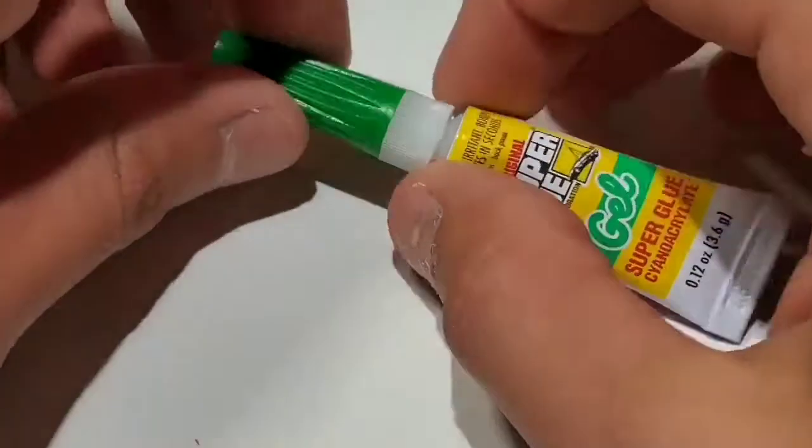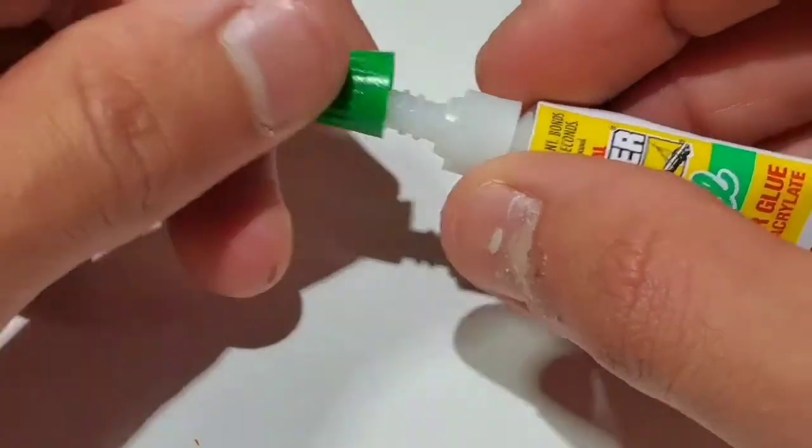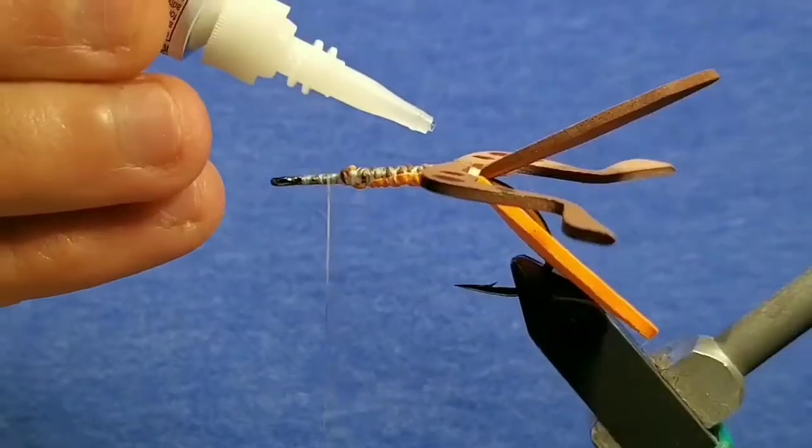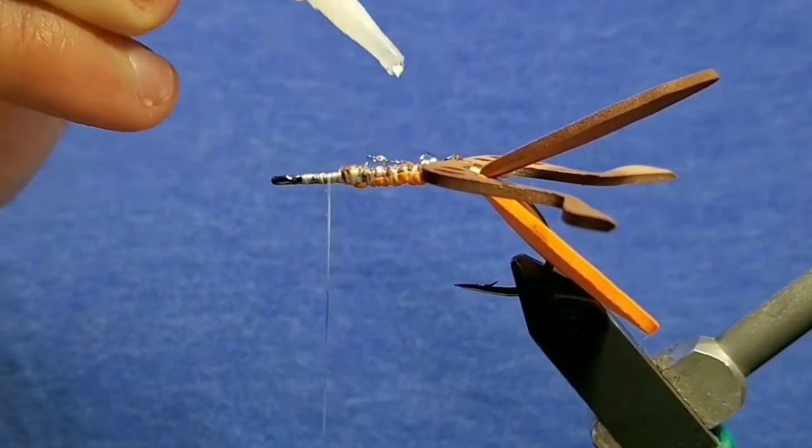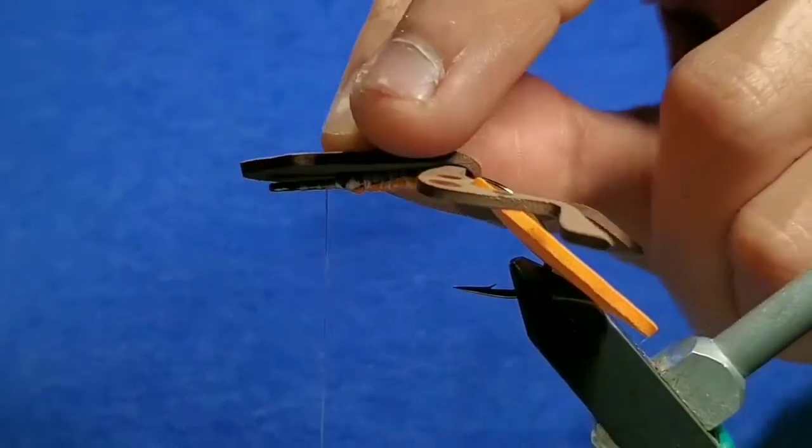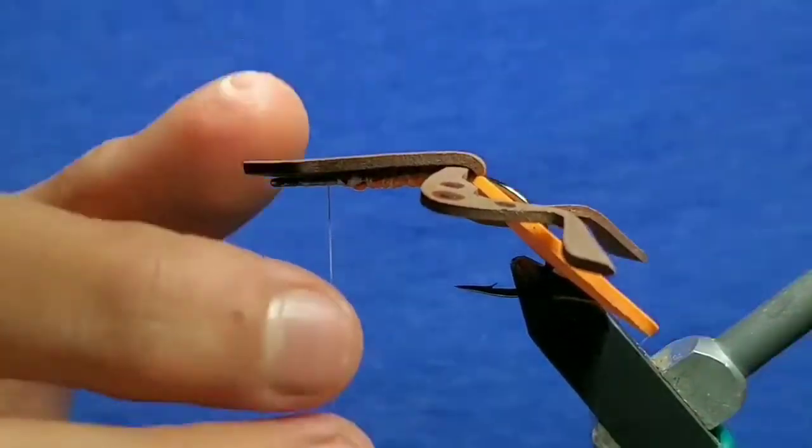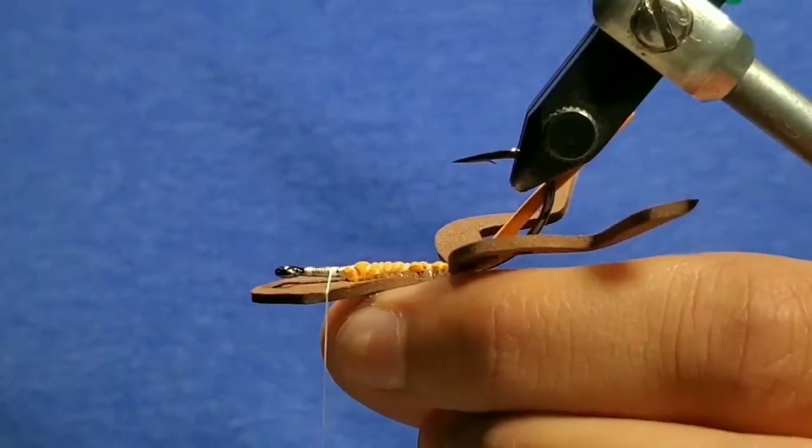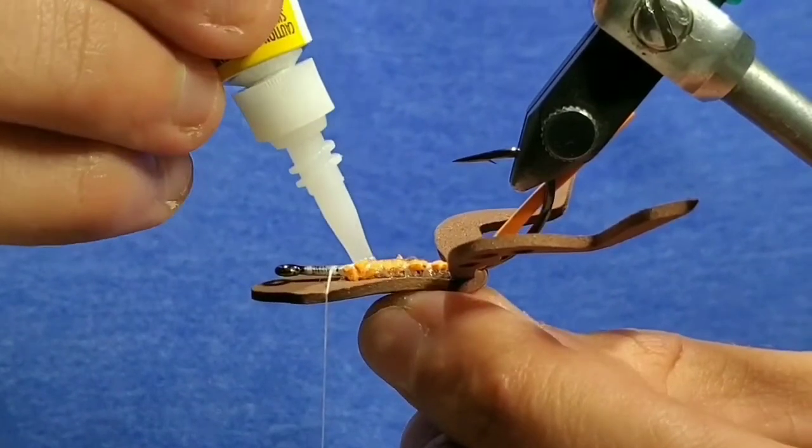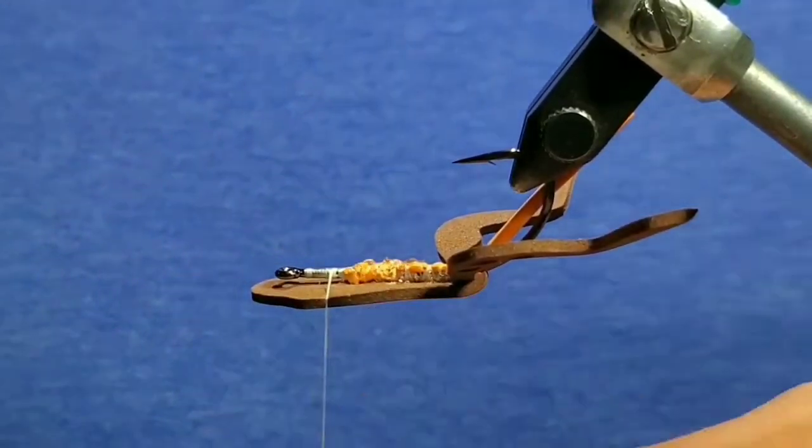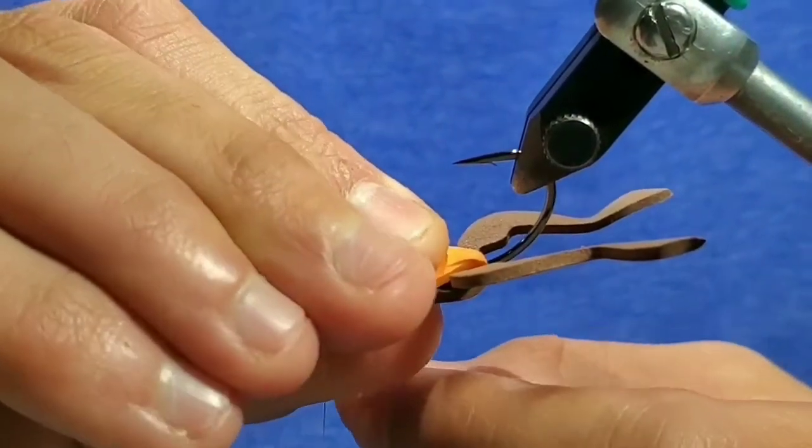Go to some super glue. Place a couple dots on the top of the hook shank. Try to stay away from the eye. Then push the piece of brown foam over the shank and press it down onto the metal to set the glue. Invert your fly and put some more super glue on the belly of it. Then push the orange piece over. Go ahead and push the two pieces of foam together so it will set.